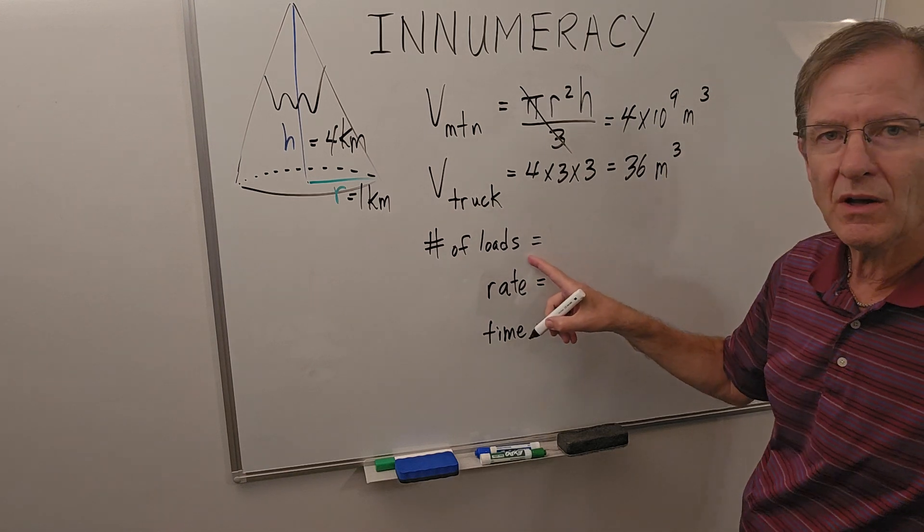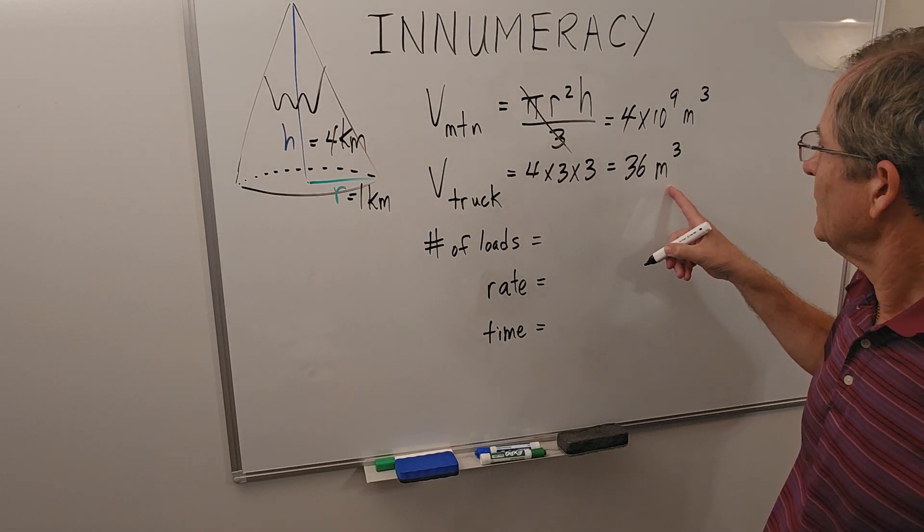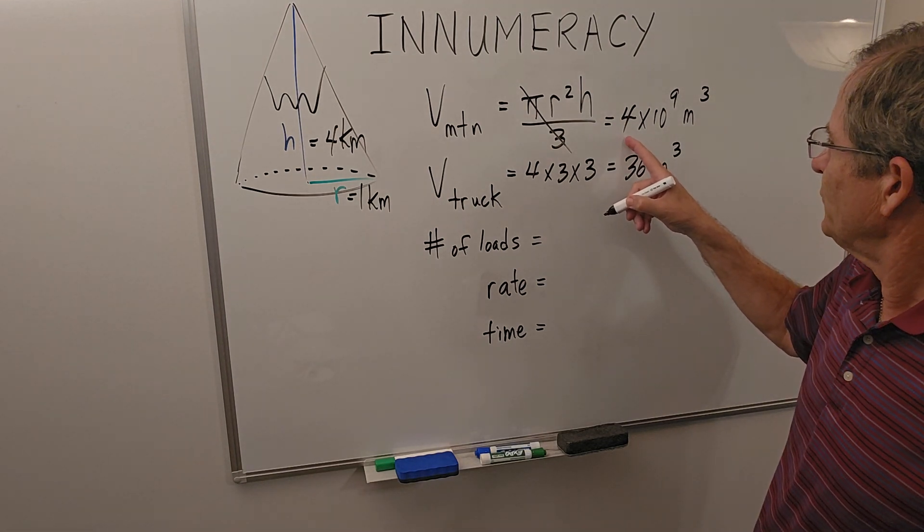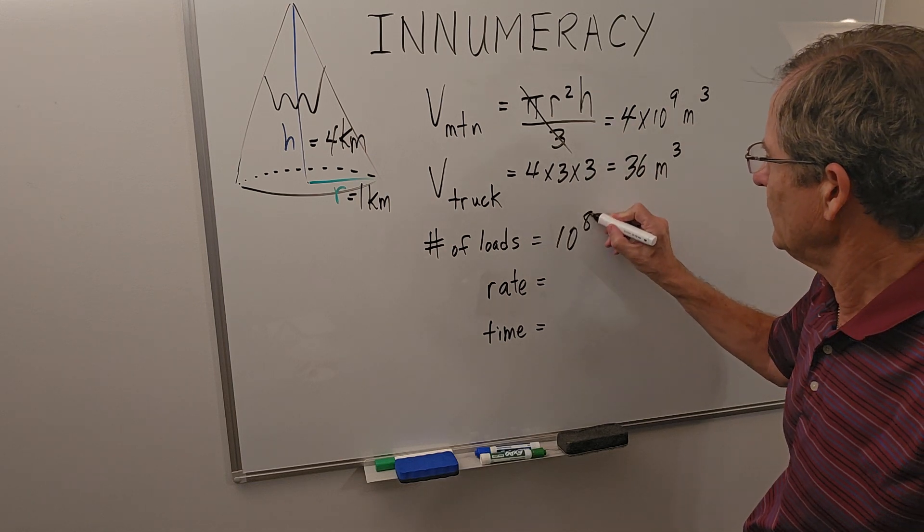So the number of loads is the total volume divided by the volume of each truck. That's about 40 times 10⁸, 40 divided by 36 about one. That would be about 10⁸ loads.